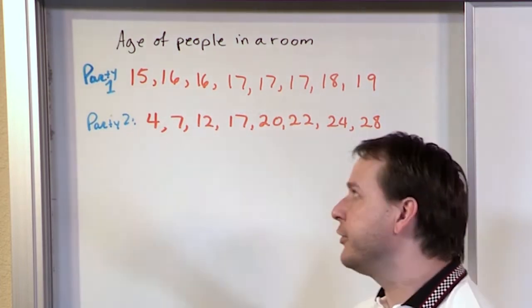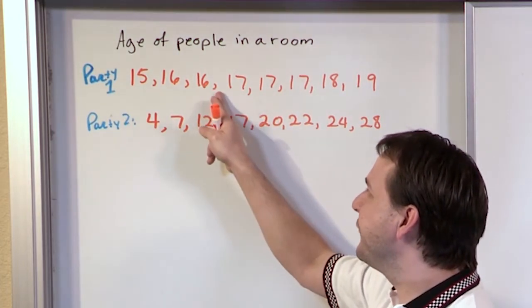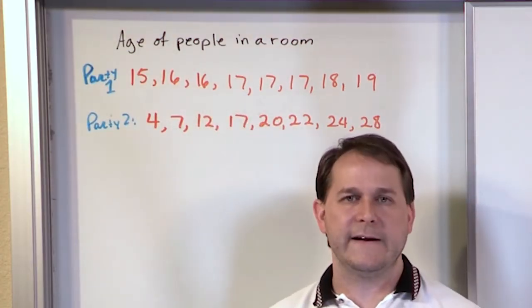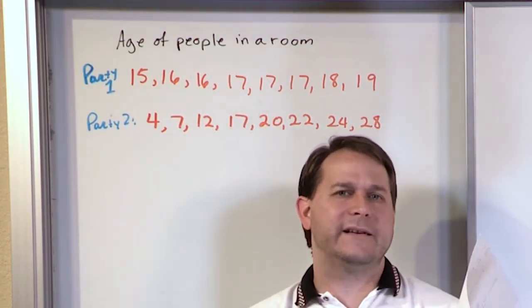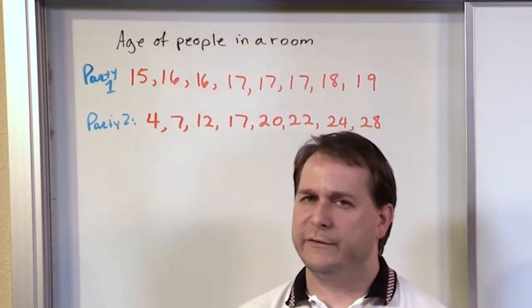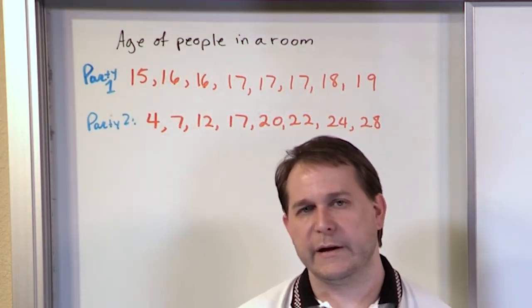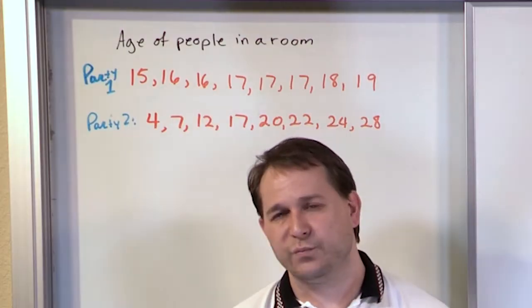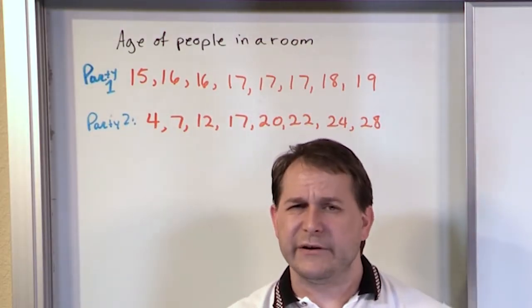But in statistics, we don't want to just talk about it and say, yeah, this one looks different. We want to calculate something and we want to find a number, some number that we could calculate that would reflect that the first party or the first group of data seems to be more tightly compacted, especially when you consider its mean, than number 2. How do we do that?